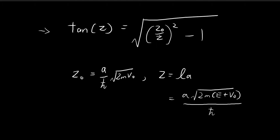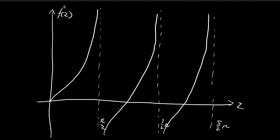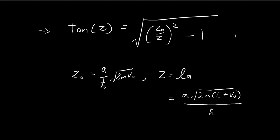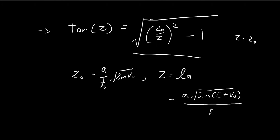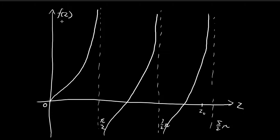Over here we have √(Z₀²/Z² - 1). You can see that when Z tends towards 0, this term is going to tend towards infinity, so this graph is going to be all the way up here when close to the origin. And when Z is equal to Z₀, this term equals 1, so you get 1 minus 1 which equals 0 — this function intersects your Z-axis at Z₀. As Z becomes larger and larger, this term becomes smaller and smaller, so the graph decreases in value going down.